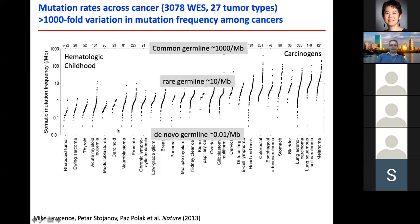To give you a sense of scale: common germline variations are roughly one per thousand bases, which is the top end of this graph. Rare germline variations are roughly 10 per megabase, and novel germline variation between kids and their parents is roughly at the bottom of this graph.